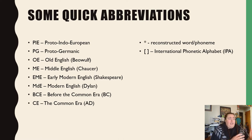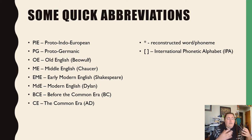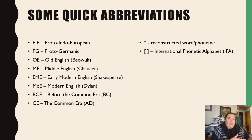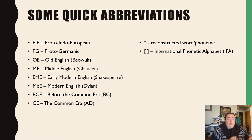Before we get to that, some quick abbreviations. You're going to see most of these through the presentation, and I will try when speaking to use the full name. With Proto-Indo-European especially — that's really a mouthful — I tend to say PIE. On the left are abbreviations, on the right are symbols you might see. The asterisk represents a reconstructed word or phoneme — not recorded in the historical record, but estimated using linguistic laws. If you see something in square brackets, that's going to be International Phonetic Alphabet symbols.